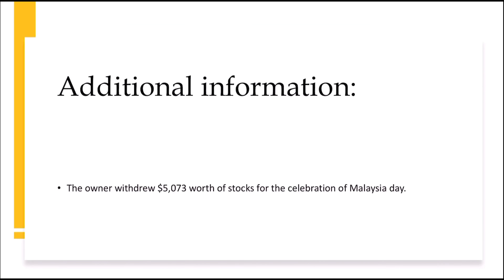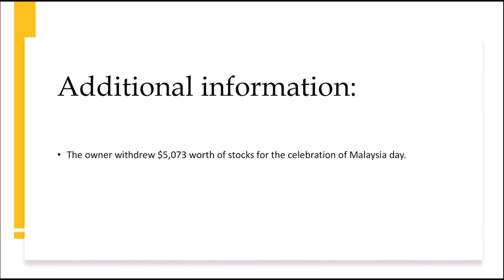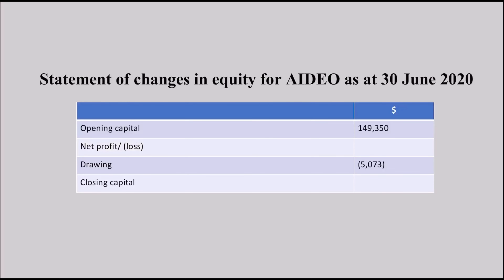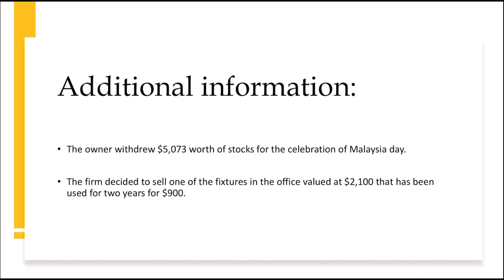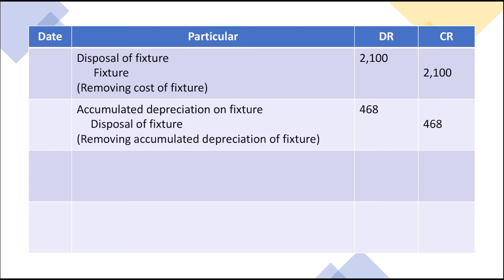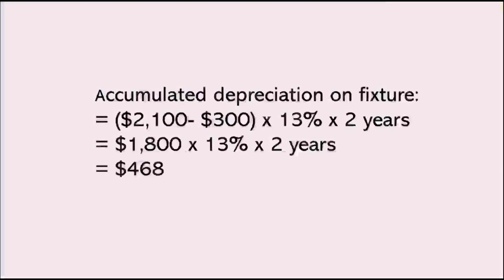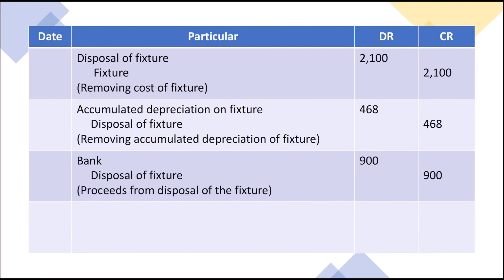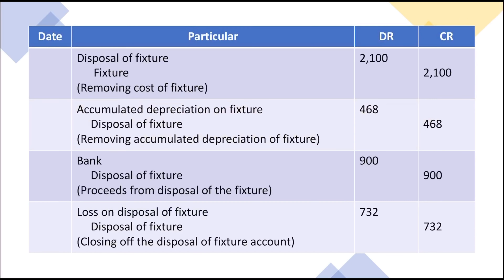Next, I was informed that the owner made drawings for the celebration of Malaysia Day, so I included that into the statement of changes of equity. The last adjustment I made was for the disposal of the fixture. I started by removing the cost of the fixture and then the accumulated depreciation, which I've calculated as shown. Then I recorded the proceeds from the disposal of the fixture and closed off the disposal account.